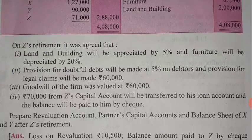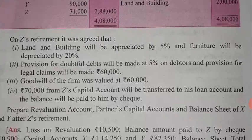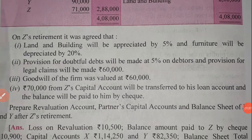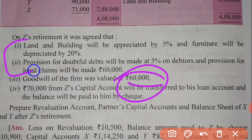The adjustments on Z's retirement are: land and building was appreciated (increased), so it will be recorded in the credit side of the revaluation account; furniture will depreciate (decrease), so it will be recorded in the debit side. Provision for doubtful debts was already 500 but now it is created at 5% on debtors. Legal claims provision to be made is 60,000, which creates a liability. Goodwill treatment will be in the capital account, so only these transactions affect the revaluation account.